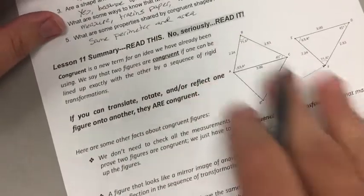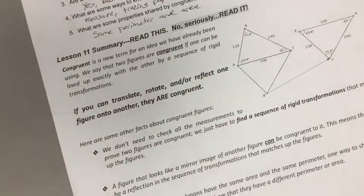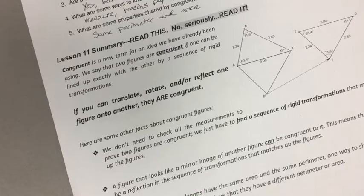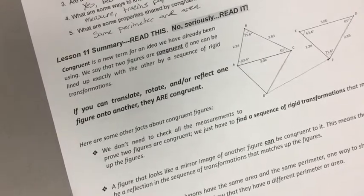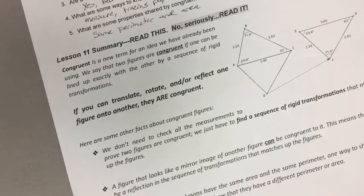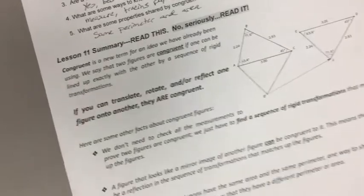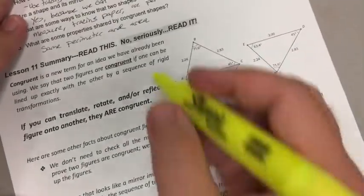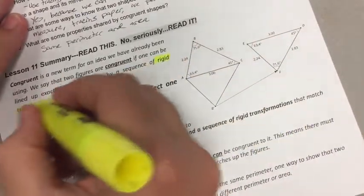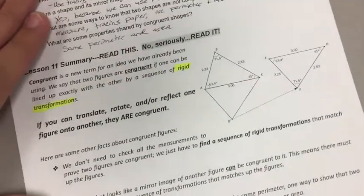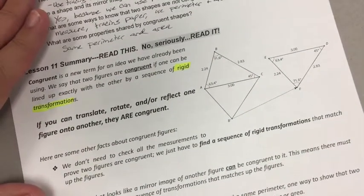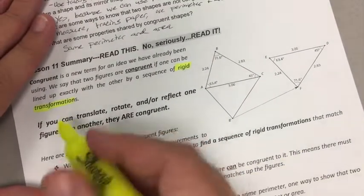Okay, here we go - lesson summary. It says congruent is a new term for an idea we have already been using. We see that two figures are congruent if one can be lined up exactly with the other by a sequence of rigid transformations. That's tracing paper, guys. We use tracing paper, but if you could see it without tracing paper, you can figure it out.